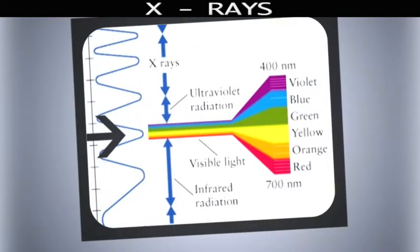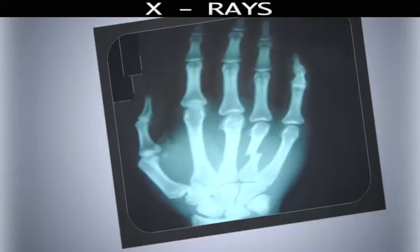Visible light, or the light we can see, has a wavelength that looks like this. X-ray wavelengths are much shorter. This short wavelength allows the X-ray to pass through many objects.